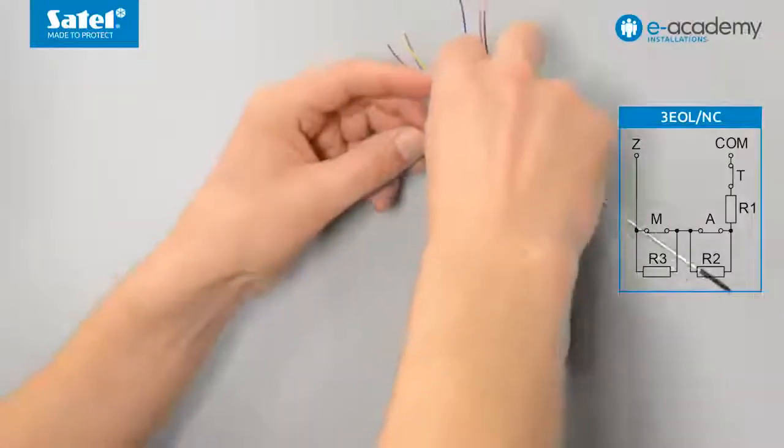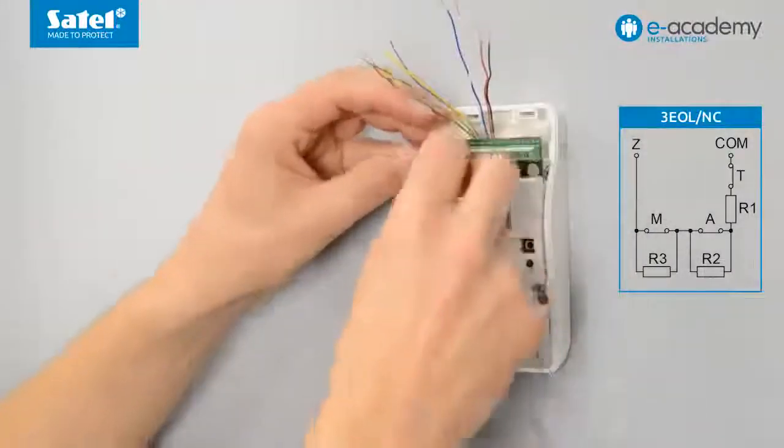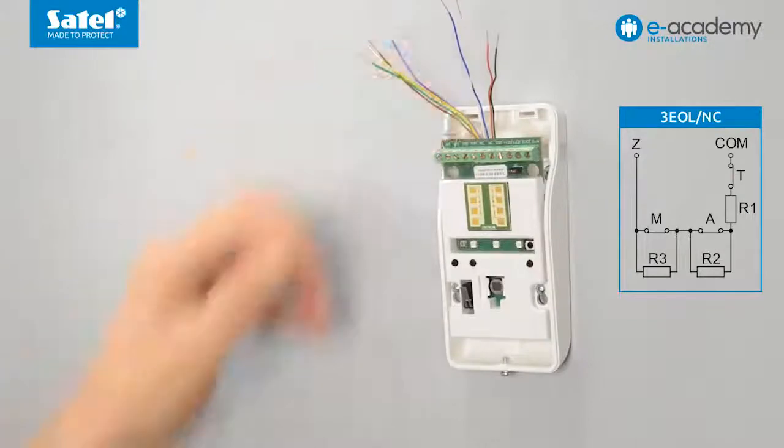Connect the R3 2.2 kilohm resistor between the anti-masking terminals.